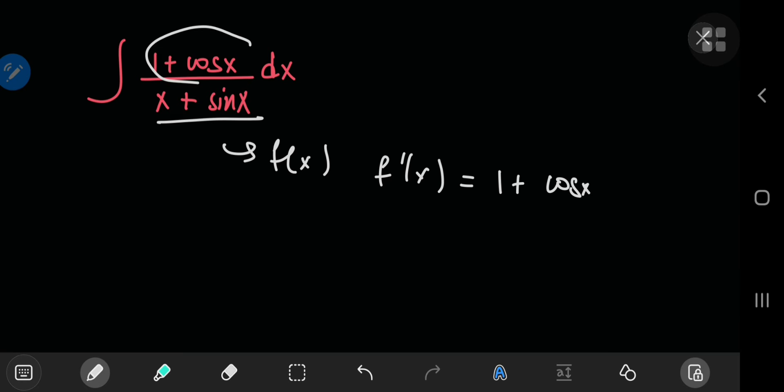This is exactly what the numerator is. So you have a function downstairs and its derivative upstairs. This evaluates to the natural log of the function, which is x plus sine of x, plus C.